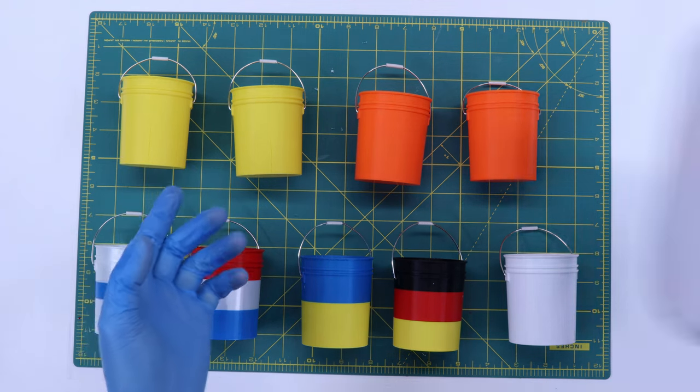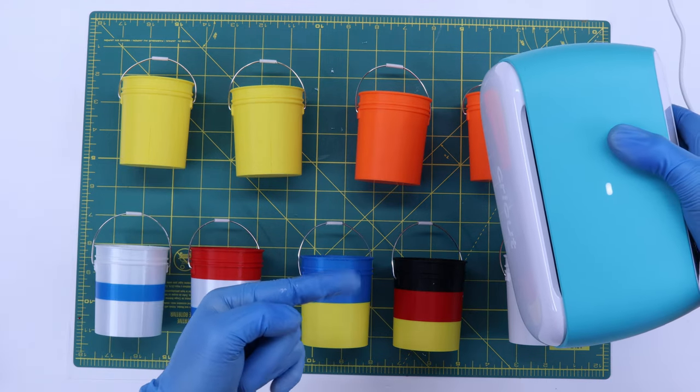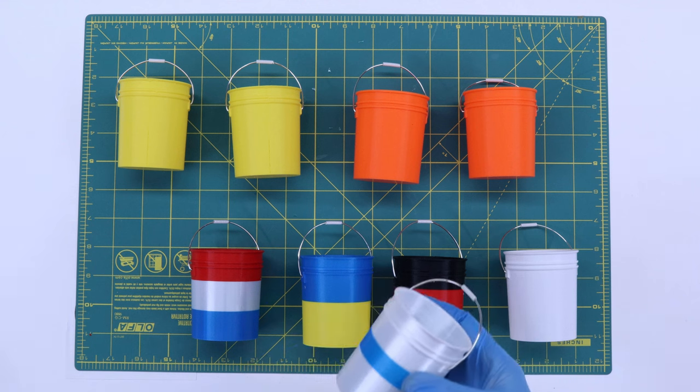The buckets are assembled, so now I'll use my Cricut to print out some labels.